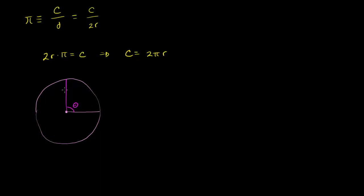We measure the arc length in — the way I like to think about it is the angle is in radians, and the arc length itself is in radiuses. How many radiuses is this arc length that subtends the angle in radians?